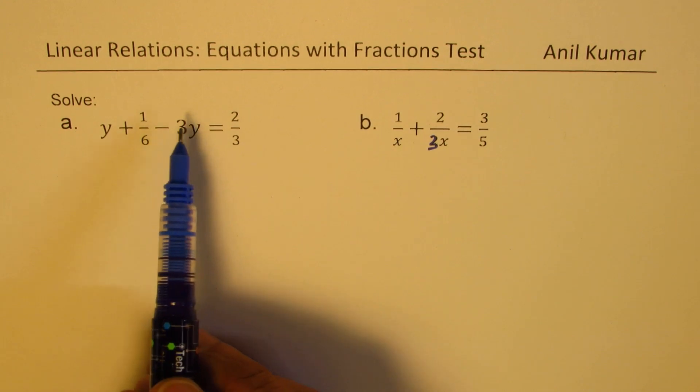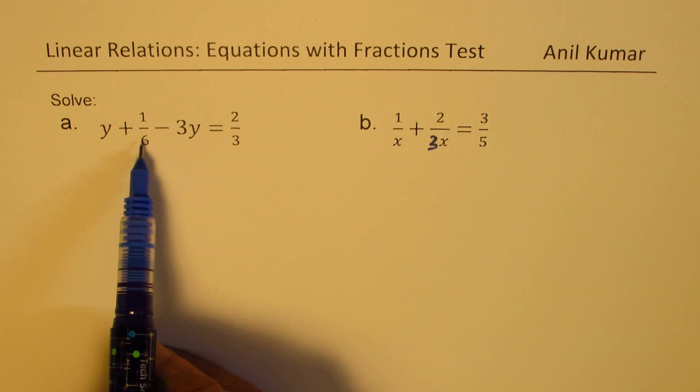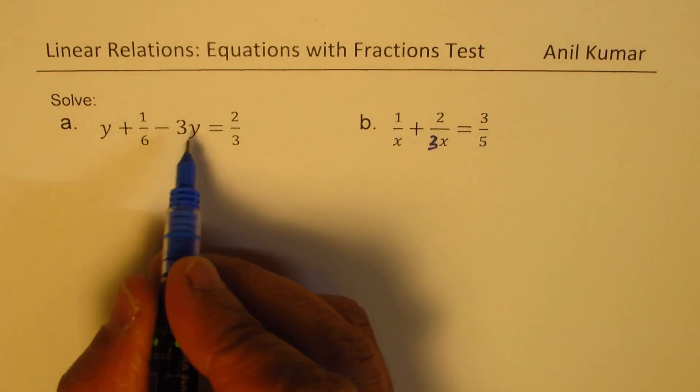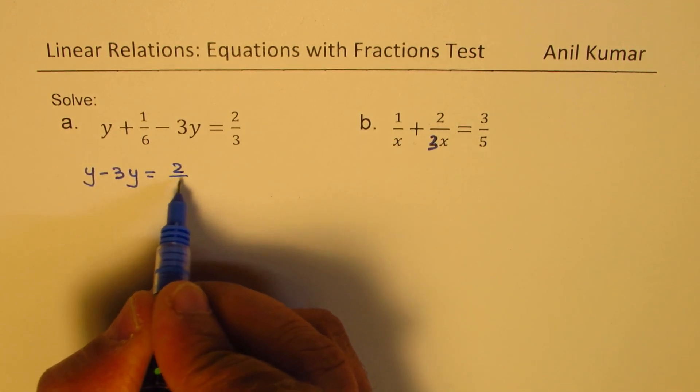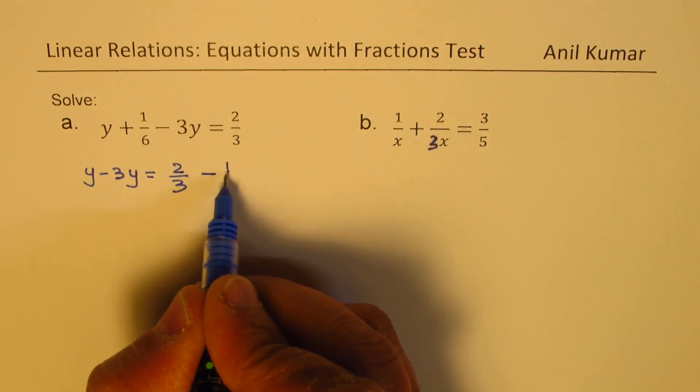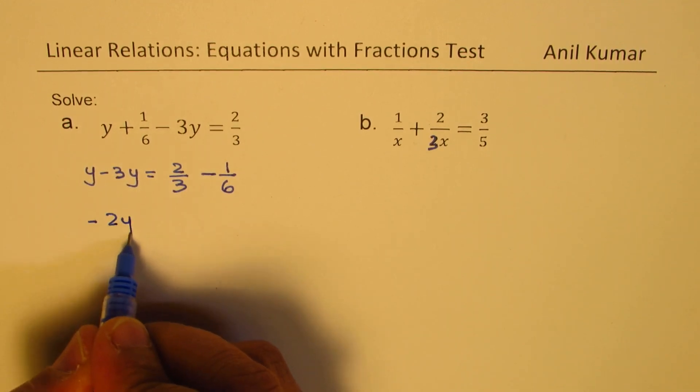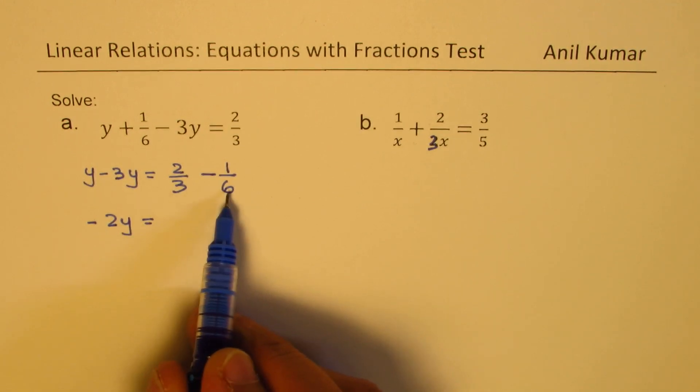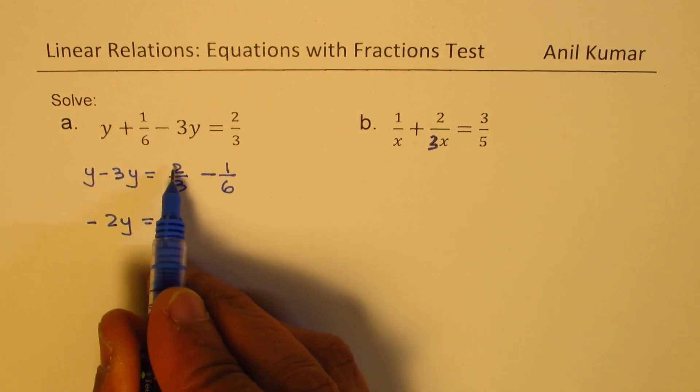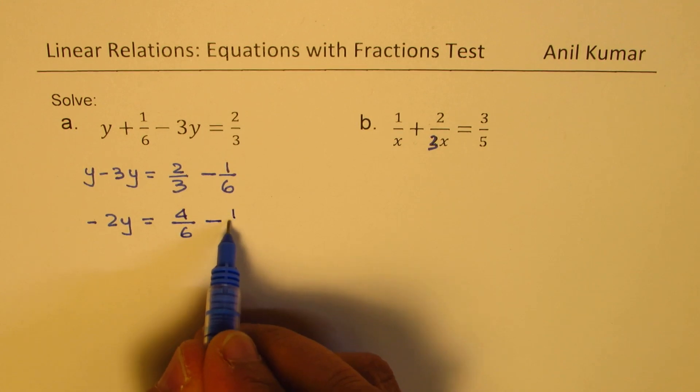For the first one, we'll try to combine the like terms, which is y in this case, and take 1 over 6 to the right side. So we get y minus 3y equals 2 over 3 minus 1 over 6. Now y minus 3y is minus 2y. Here we should take a common denominator, which is 6. To make this as 6, I have to multiply by 2 both terms. So I could write this as 4 over 6 minus 1 over 6.